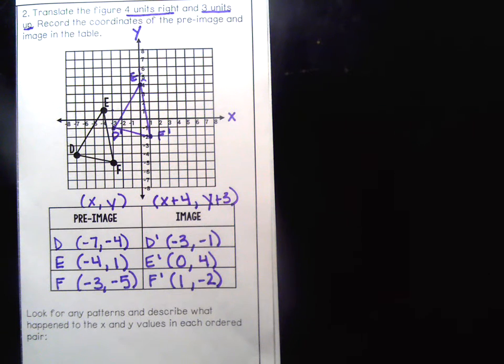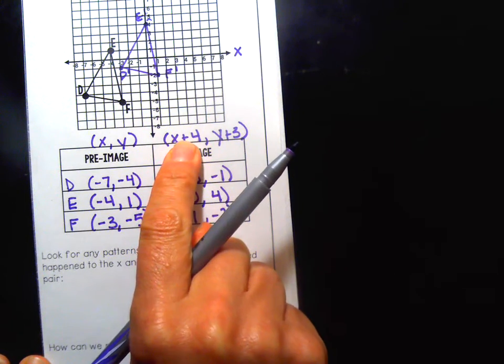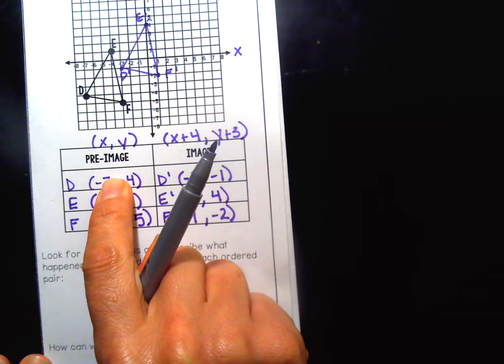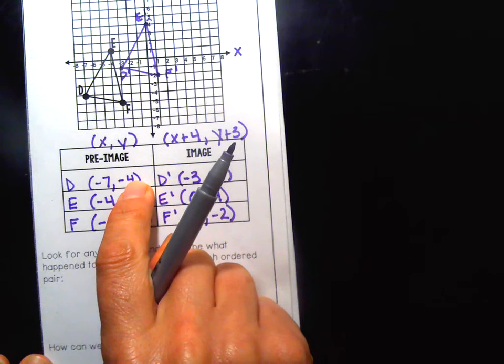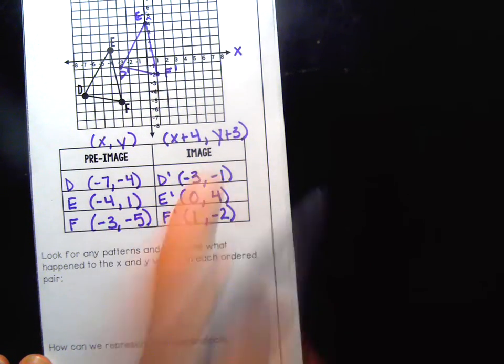Because I applied the rule x plus four, y plus three. So that's the pattern that I see in the ordered pair. When you add four to the x coordinate on the pre-image and you add three to the y coordinate on the pre-image, you get the coordinates for the image, which shifts it four units to the right and three units up.